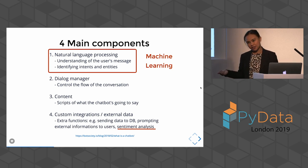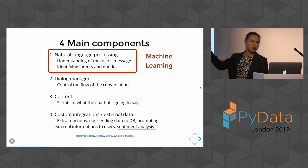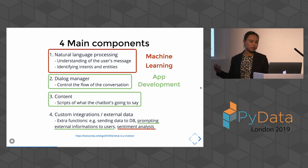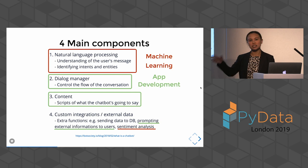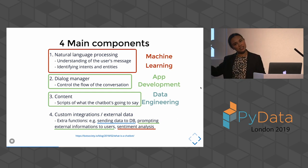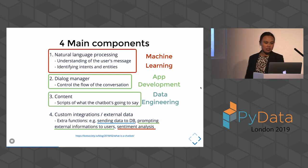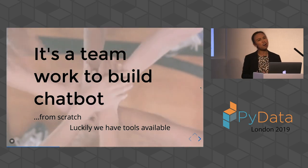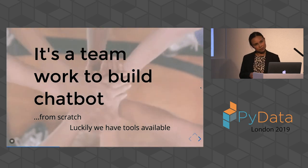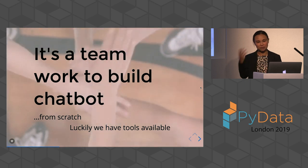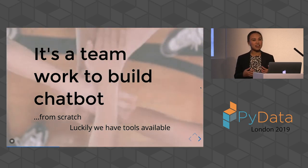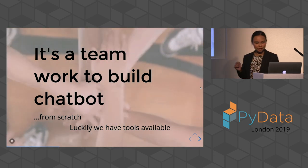To recap: the components of a chatbot involve machine learning — building the NLU involves NLP, maybe deep learning and language models. You also need to build an app to develop it, and when you deploy the bot, you need to know how to deploy a web app or hook it with Slack or Facebook or whatever. There's also data engineering involved — if you want to collect data, store it in a database, and orchestrate how you use it later. You can see it is a teamwork effort. Building a chatbot from scratch is really hard, but luckily we have some tools available — which means now everybody can actually build a chatbot.